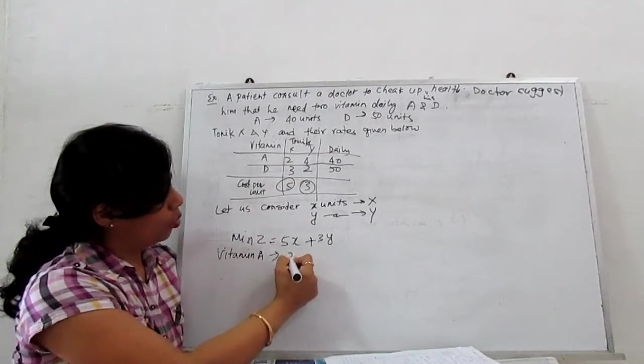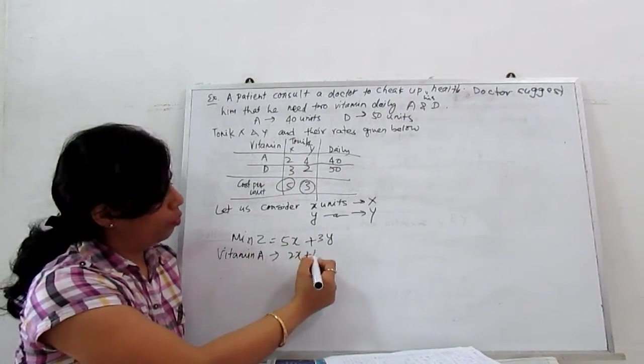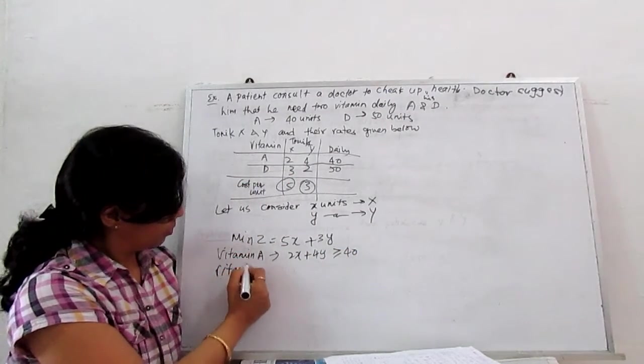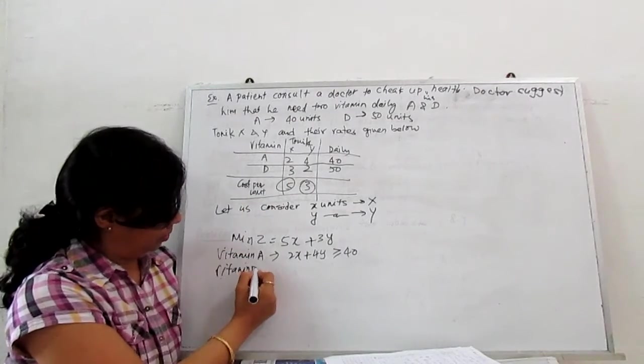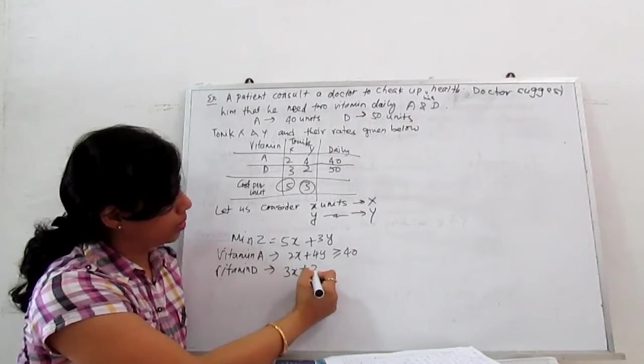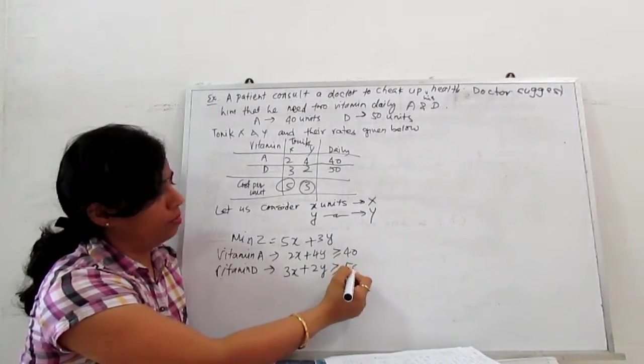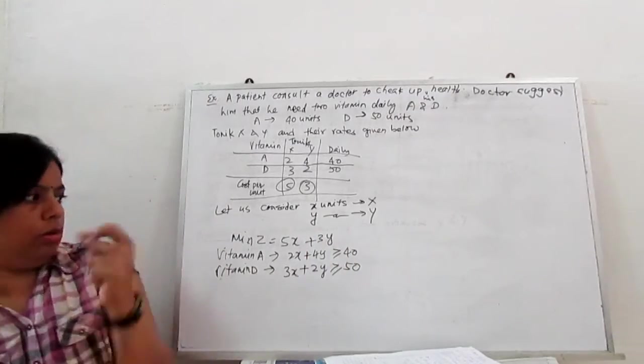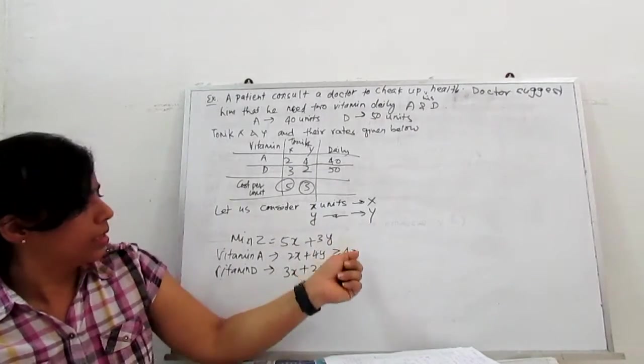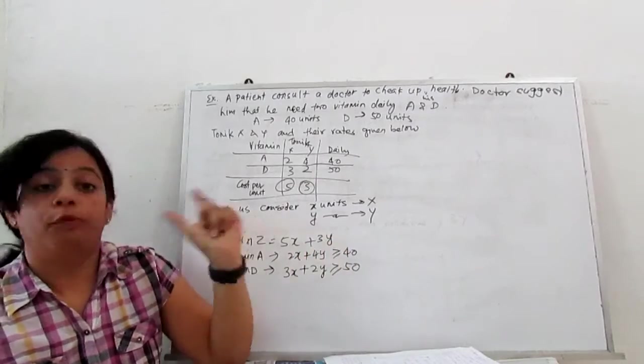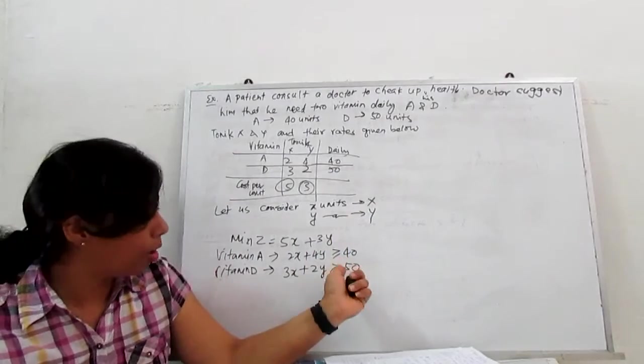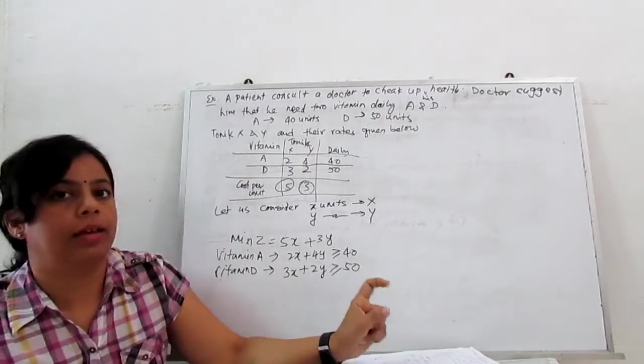For vitamin A, our constraint is 2X + 4Y ≥ 40. For vitamin D: 3X + 2Y ≥ 50. This means the patient must have at least 40 units of vitamin A or more, and 50 units of vitamin D or more, but not less than these amounts.